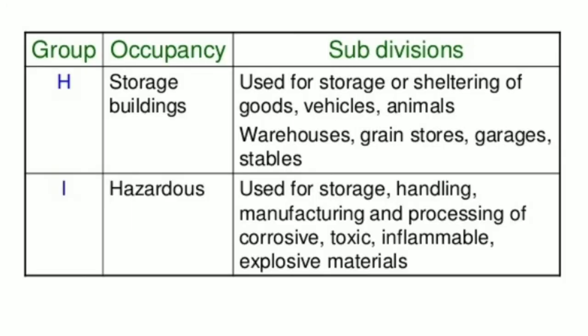Group H is Storage Buildings, which are used for storage or sheltering of goods, vehicles, and animals. Examples include warehouses, grain stores, garages, and stables.